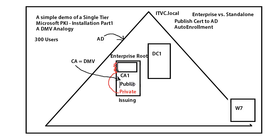The public and private key get generated, then the certificate is going to be built. The public key will be placed into the certificate, and then the certificate will be signed by the private key. Something very important here is that the public key and the private key are mathematically connected to each other — that's a very important point. The public key we make available to everybody.